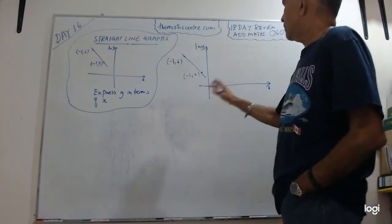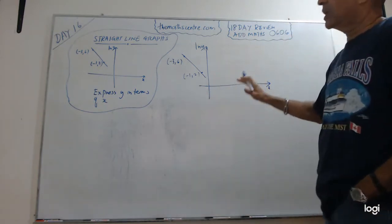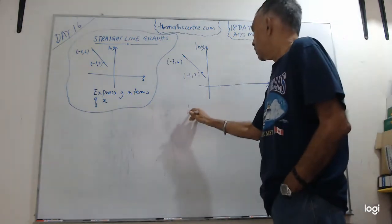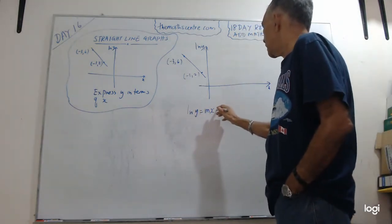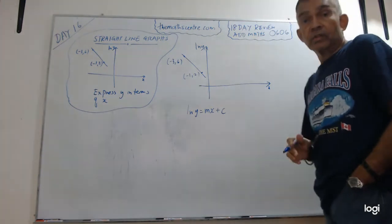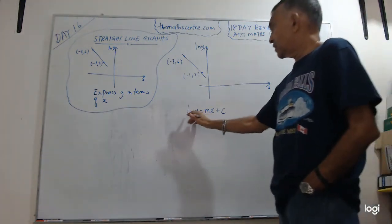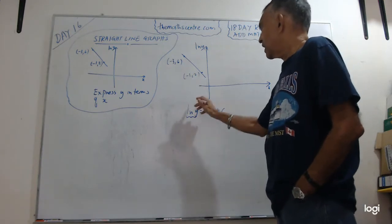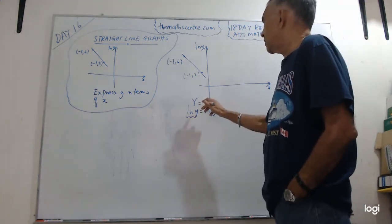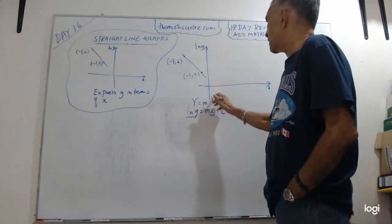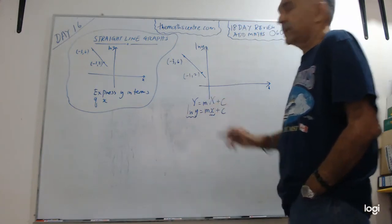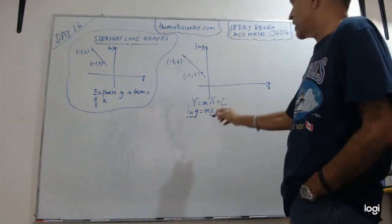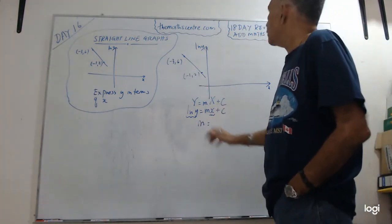So first off when you have a problem like this, you write out the equation of the straight line. So ln Y equals to M X plus C. This is the equation of the straight line. Remember, this is your vertical axis and this is your horizontal axis. Many books like to write it like this. Y equals to M X plus C. So first off maybe the easy thing here to do, let's find the gradient M.